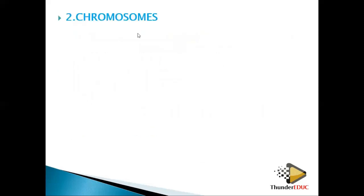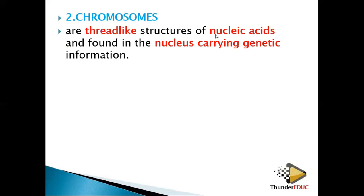When the chromatin condenses — when it shortens and becomes thick — it forms what you call a chromosome. So chromatin and chromosomes are the same thing but in different versions, like water in ice form versus liquid form. Chromosomes are thread-like structures of nucleic acids found in the nucleus that carry genetic information.